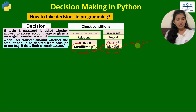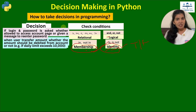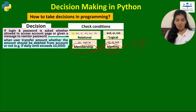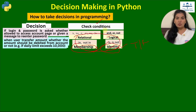All of these operators — relational, logical, membership, and identity — give results in true or false, because whenever we take a decision we take it based on some condition. If that condition is true we take one decision; if that condition is false we take another decision. So for checking conditions we can use any of these operators that result in true or false.